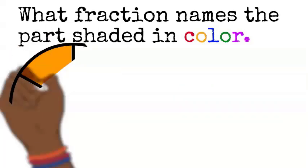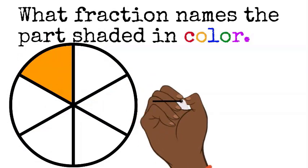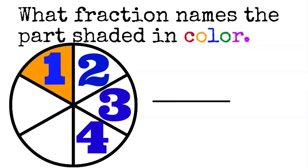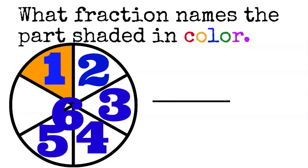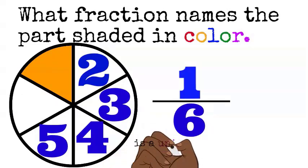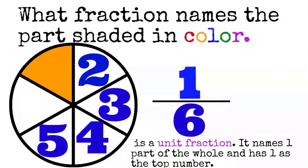Again, try this one. Draw your bar to separate the top and bottom. Let's count all the equal parts in the fraction. In this case, there's six equal parts. So, that's right. Six becomes your bottom number, and one part shaded would be your top number. So, one-six is a unit fraction. It names one part of the whole and has one as the top number.